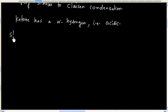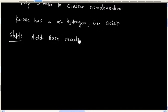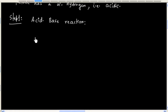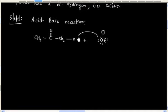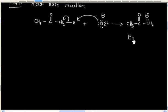So the first step we will have an acid-base reaction. Ethoxide ion will act as a base and it will take a proton from the ketone. And finally we will generate an enolate ion. This enolate ion is resonance-stabilized.